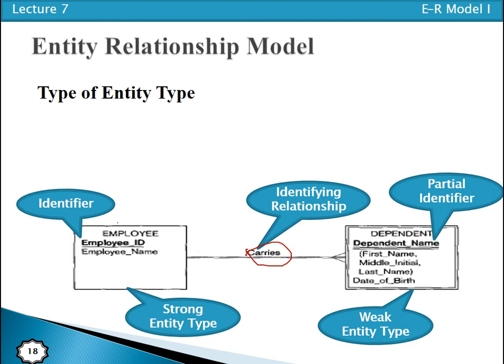One important term is 'identifying owner.' The entity type on which a weak entity type depends is called the identifying owner. For example, 'Employee' is the identifying owner because the weak entity type 'Dependent' depends on it. Thanks for watching.